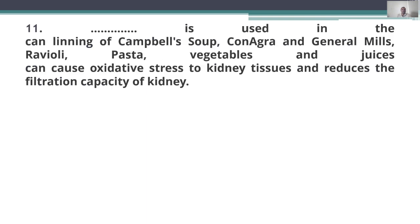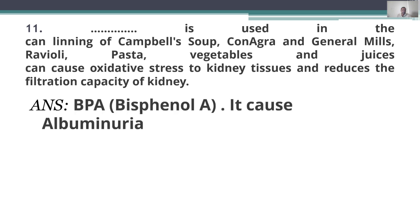Eleventh question: what chemical is used in the can lining of Campbell's soup, corn, and General Mills ravioli pasta, vegetables, and juices — and can cause oxidative stress to kidney tissues, reduces the filtration capacity of the kidney, and also causes albuminuria? The answer is BPA — bisphenol A.